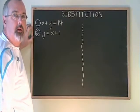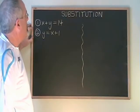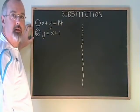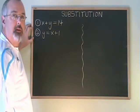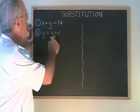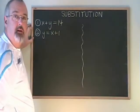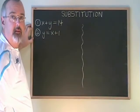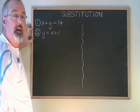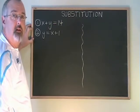With substitution, we are able to solve a system of two equations, which means we are finding the point where these two lines would cross on the graph. Substitution is an algebra trick that allows us to do that without making a graph.